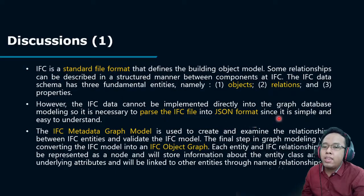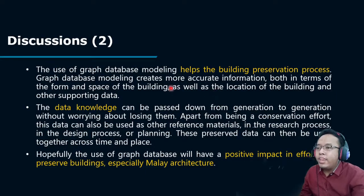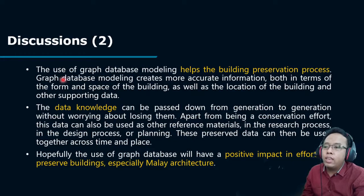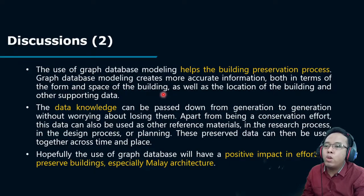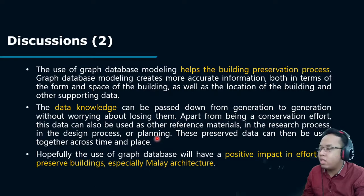The final step of graph modeling was converting the IFC model into an IFC object graph. The use of graph database modeling helps the building preservation process, creating more accurate information in terms of the form and space of the building, as well as its location and other supporting data. This data knowledge can be passed down from generation to generation without worrying about losing it. Apart from being a conservation effort, this data can also be used as reference material, and hopefully the use of graph database will have a positive impact on efforts to preserve buildings, especially Malay architecture.